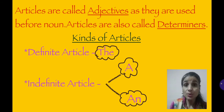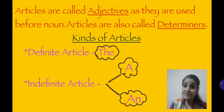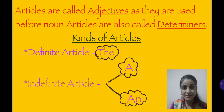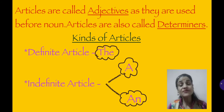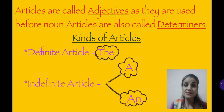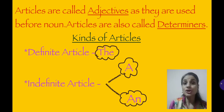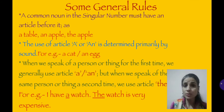Children, do you know there are two kinds of articles: definite article and indefinite article. Definite article is 'the', and indefinite articles are 'a' or 'an'. Why are they definite and indefinite? We learn that after their uses. Some general rules about the usage of articles are: